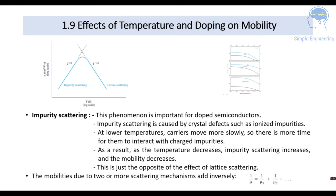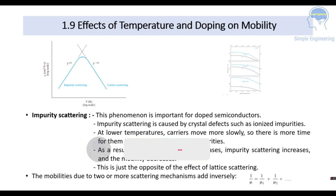Impurity scattering applies to doped semiconductors and is caused by crystal defects such as ionized impurities. At low temperatures, carriers move more slowly and have more time to interact with charged impurities. So when temperature decreases, impurity scattering increases and mobility decreases — the opposite of lattice scattering. Both mechanisms are shown in the figure. Since mobility is influenced by two or more scattering mechanisms, they add inversely: 1/μ = 1/μ₁ + 1/μ₂ + ...